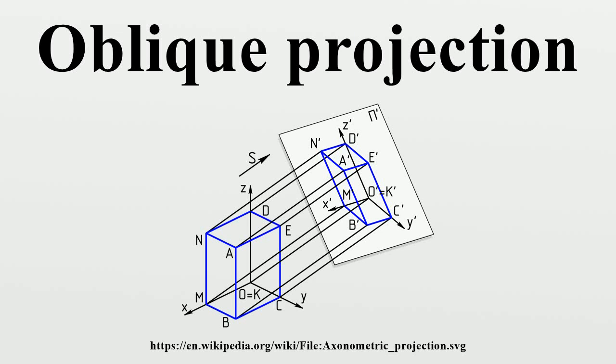Oblique projection is a simple type of technical drawing of graphical projection used for producing two-dimensional images of three-dimensional objects. The objects are not in perspective, so they do not correspond to any view of an object that can be obtained in practice, but the technique does yield somewhat convincing and useful images.